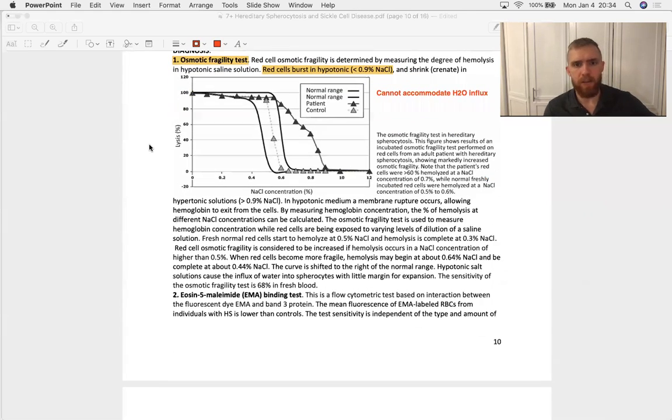So we diagnose spherocytosis with the osmotic fragility test and red cells burst in hypotonic solution, that means there's less solute outside the cell than inside the cell, so water moves inside the cell. So if any old red cell will burst in a hypotonic solution, well then a cell with less membrane is going to be able to accommodate less water, therefore the cell with less membrane bursts before the normal red blood cell, and that's what we see in this graph here on page 10. And that's the extent to which I'm going to learn about the osmotic fragility test.